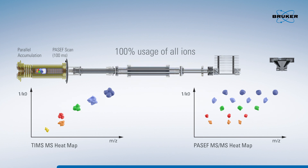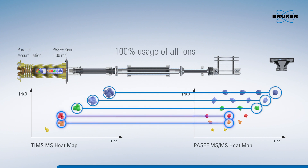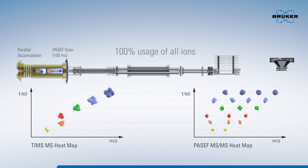12 or more precursors from the next 10 TIMS scans are serially selected and fragmented by MS/MS in a data-dependent analysis, resulting in a sequencing speed of more than 120 Hz.